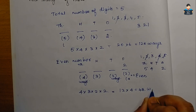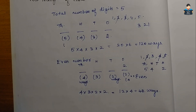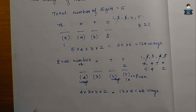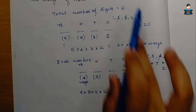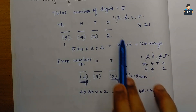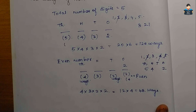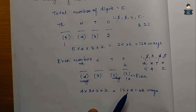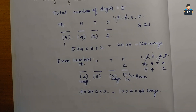So 48 even numbers can be formed in this arrangement. Now let's move to question 5.